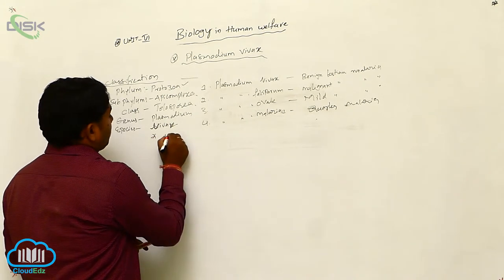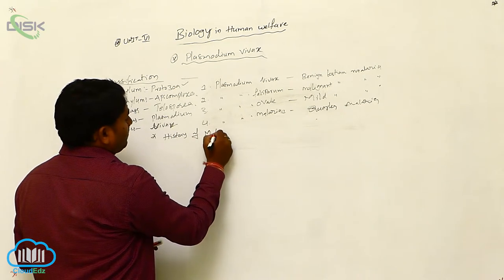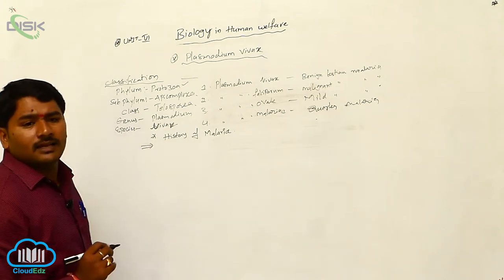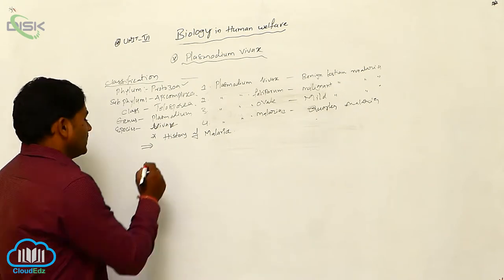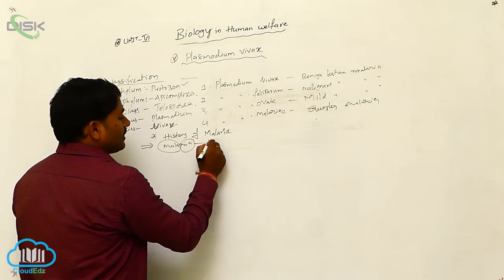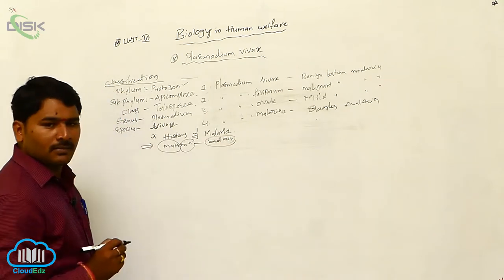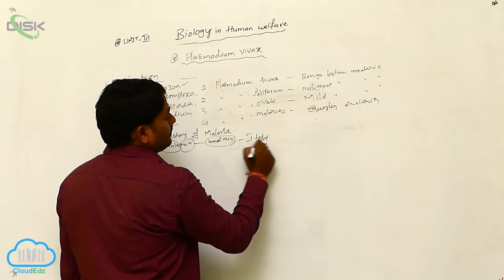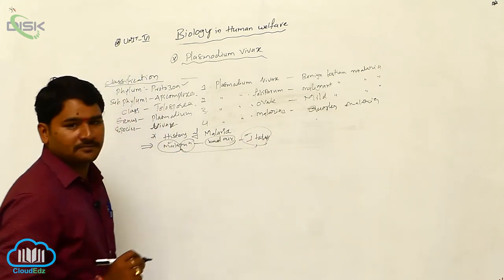Let us see the history of malaria. Malaria was thought to be caused by bad air. That is why they gave it the name malaria — 'mala' means bad and 'aria' means air. It is an Italian word meaning bad air.